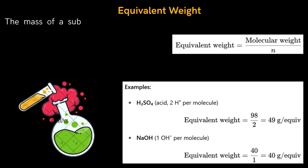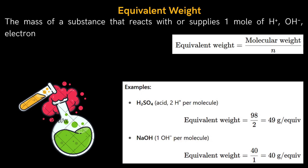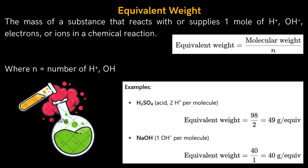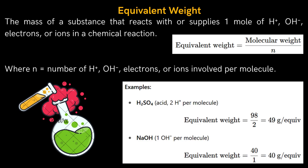Knowledge of equivalent weight and molecular weight are also important parameters for quantitative determination of a substance in volumetric analysis. The equivalent weight is the mass of a substance that reacts with or supplies 1 mole of H⁺ ion, hydroxyl ion, or electrons per ion in a chemical reaction. The formula is: equivalent weight = molecular weight of substance ÷ N, where N is the number of H⁺ ions, hydroxyl ions, or electrons involved per molecule. For example, the equivalent weight of H₂SO₄ = 98 ÷ 2 = 49 g/equivalent, since two hydrogen ions are involved. The equivalent weight of NaOH = 40 ÷ 1 = 40 g/equivalent, where 1 is the number of hydroxyl groups.